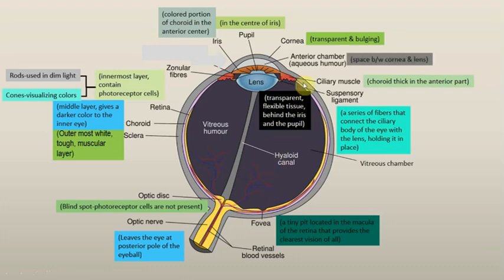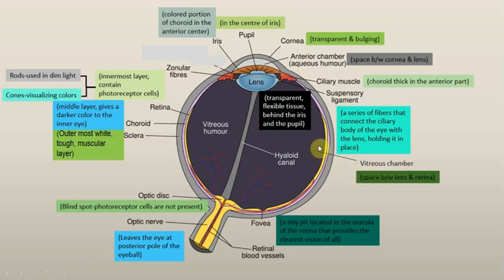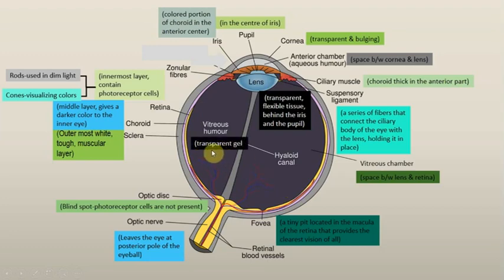Then there is the aqueous chamber — the space between the cornea and the lens — and the fluid present in this space is called the aqueous humor. Aqueous humor is very important for the eyes; if it is not present the eyes can become diseased or injured. After the aqueous chamber there is another chamber: the space between the lens and the retina. The material present in this space is the vitreous humor, which is a gel-like transparent substance that helps keep the eye's shape.